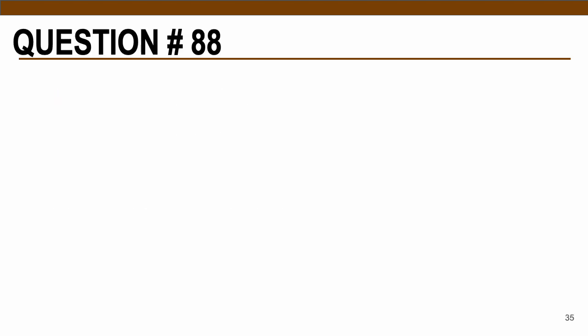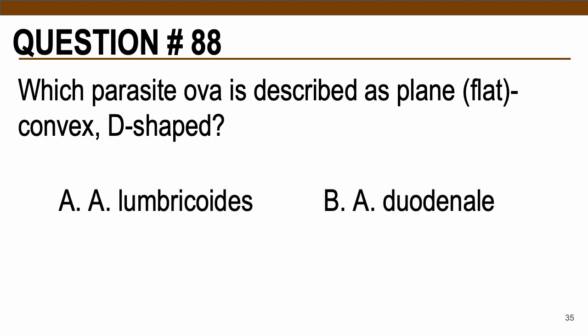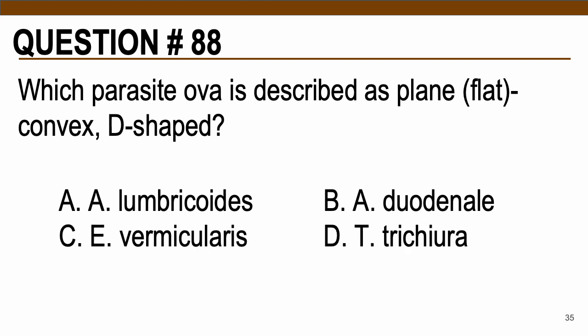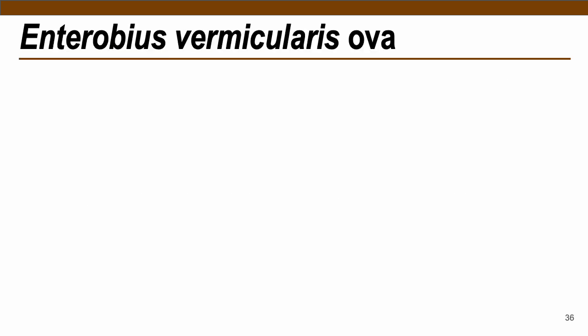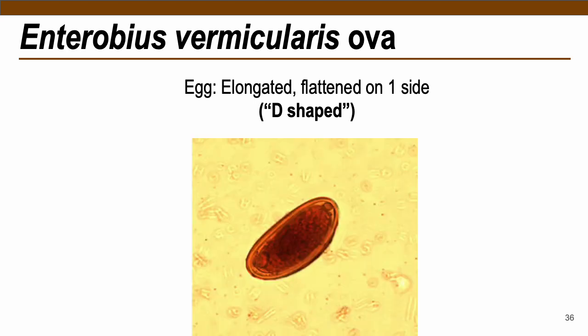Question number 88: Which parasite ova is described as plain, flat, convex, D-shaped? Choices: A — Ascaris lumbricoides, B — Ancylostoma duodenale, C — Enterobius vermicularis, D — Trichuris trichura. The correct answer is letter C, Enterobius vermicularis. Your Enterobius vermicularis ova is elongated with one side flattened — what we call the D-shaped ova.